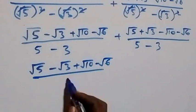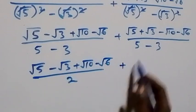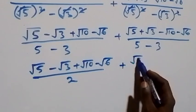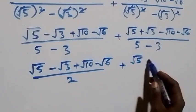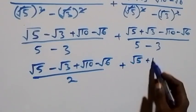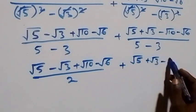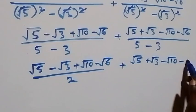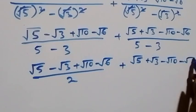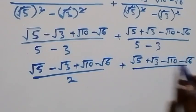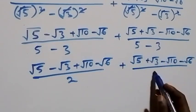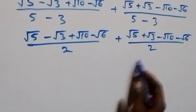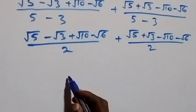So we have (√5 − √3 + √10 − √6) over 2, plus (√5 + √3 − √10 − √6) over 2. Both fractions share the same denominator of 2.